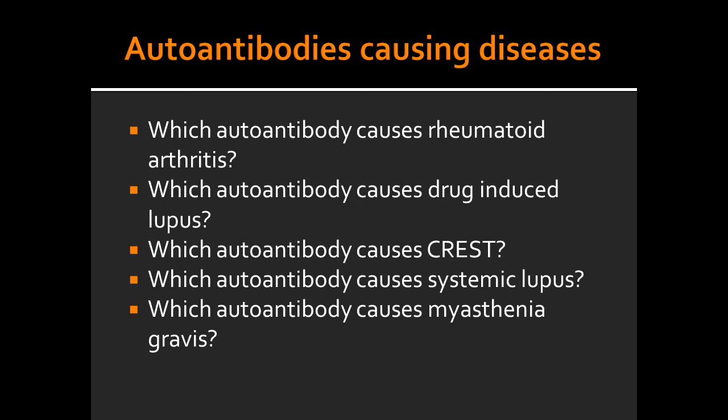Which autoantibody causes the CREST syndrome? The CREST syndrome is caused by anti-centromere autoantibody. Which autoantibody causes systemic lupus? Systemic lupus is caused by anti-nuclear antibody, also known as ANA.